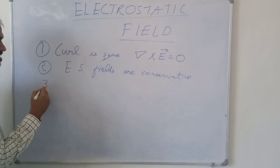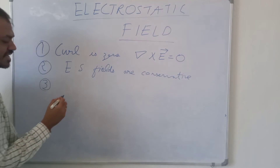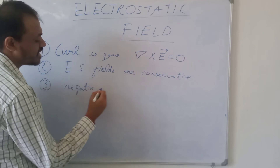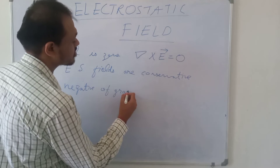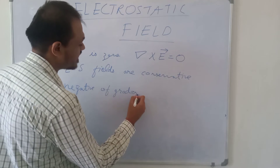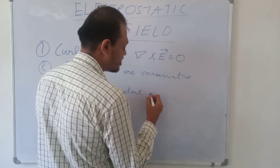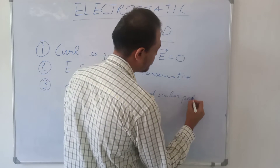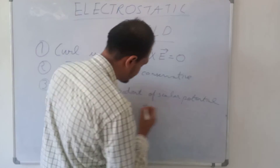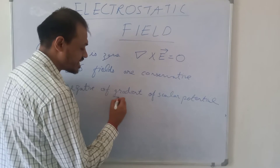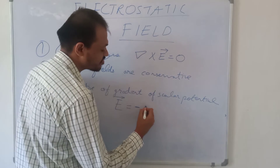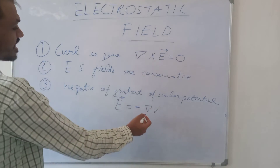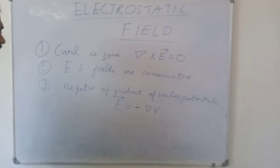The third point is that the electrostatic field is the negative of the gradient of scalar potential. So if we denote the scalar potential by V, then electrostatic field E vector is given by minus ∇V.